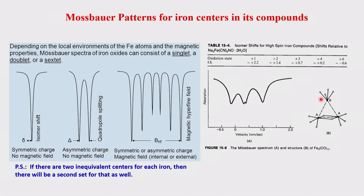In the Fe3(CO)12 structure, the A-type irons have bridging carbonyls, whereas the B-type iron does not. Because of this bridging, the electronic environments differ — electronically and symmetrically they differ — so the electric field gradient differs, ΔEQ changes, and that is what is observed in the spectrum.